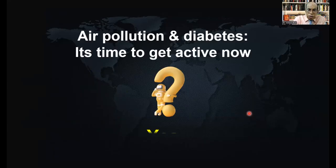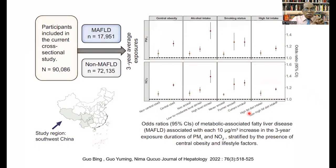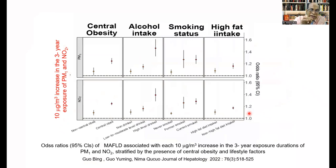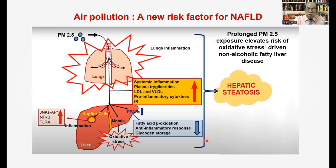Air pollution and diabetes — is it time to get active now? Yes. What about MAFLD? Air pollution is now shown to be a risk factor for MAFLD also. This is a cross-sectional study of 90,000 patients, of which 70,000 had NAFLD, and for every 10 microgram increase in the three-year exposure to particulate matter and nitrogen dioxide, the hazard ratio for NAFLD is increased, particularly if the patient is obese, has a high level of alcohol intake, or has a high level of smoking. In data from 17,000 patients with 4,640 having NAFLD, as the level of PM2.5 increases, the chances of NAFLD are higher in lean individuals, younger populations, and women. Air pollution produces NAFLD through increased inflammation and increased oxidative stress.